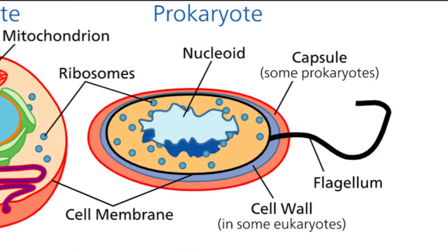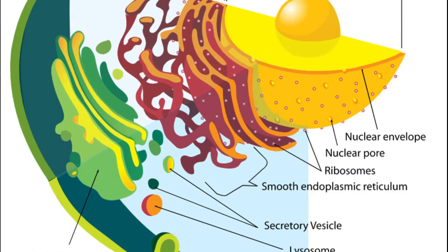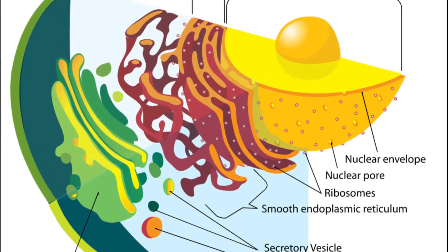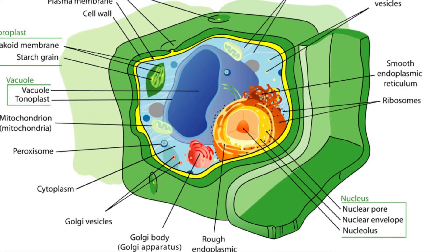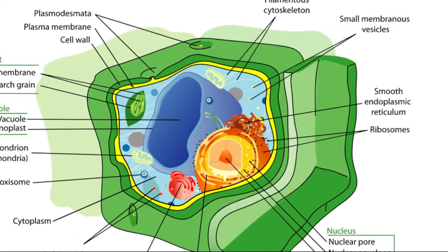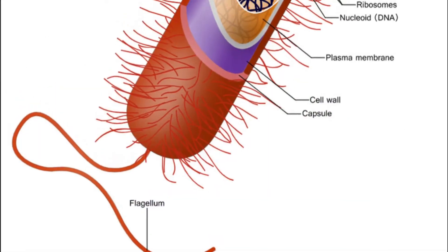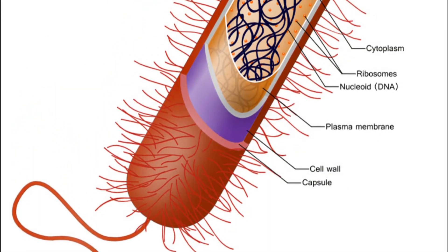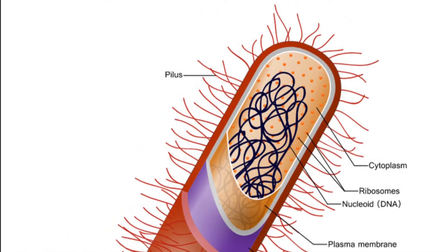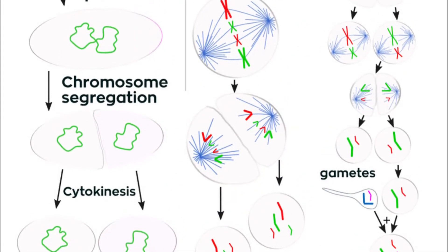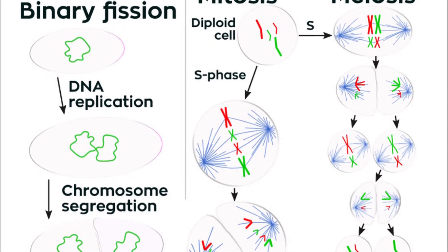Soon after Robert Hooke discovered cells in cork, Anton van Leeuwenhoek in Holland made other important discoveries using a microscope. Leeuwenhoek made his own microscope lenses, and he was so good at it that his microscope was more powerful than other microscopes of his day. In fact, Leeuwenhoek's microscope was almost as strong as modern light microscopes. Using his microscope, Leeuwenhoek discovered tiny animals such as rotifers. Leeuwenhoek also discovered human blood cells. He even scraped plaque from his own teeth and observed it under the microscope.